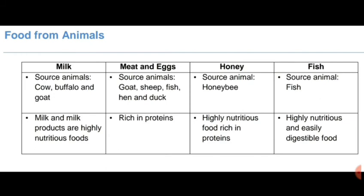We also obtain food from animals. Examples include milk, meat, eggs, honey, and fish. Milk, meats, and eggs are rich in proteins; honey is highly nutritious; and fish is also highly nutritious and easily digestible.